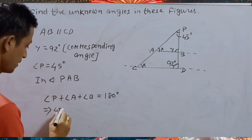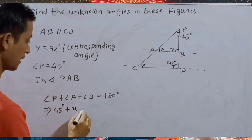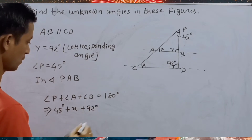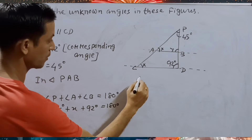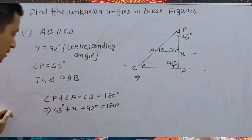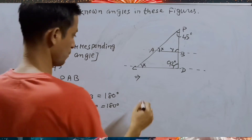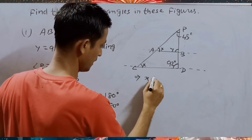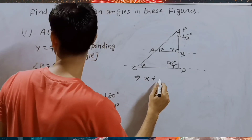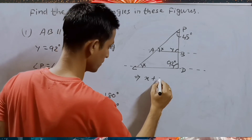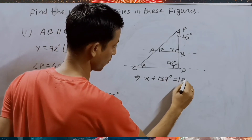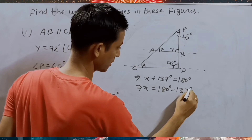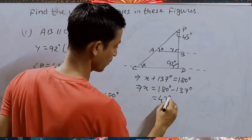45 degrees is given, angle D is X, and angle P is Y which is given as 92 degrees. So X plus 137 degrees is equal to 180 degrees. Therefore X is equal to 180 degrees minus 137 degrees, which is equal to 43 degrees.